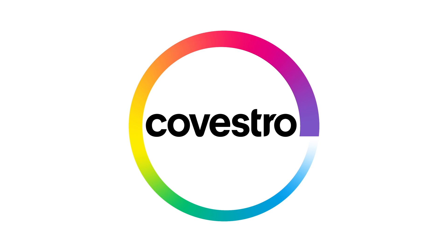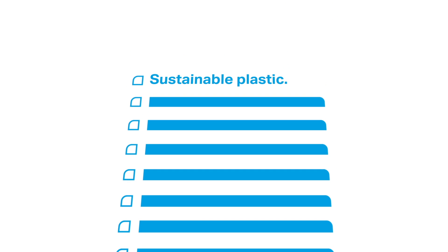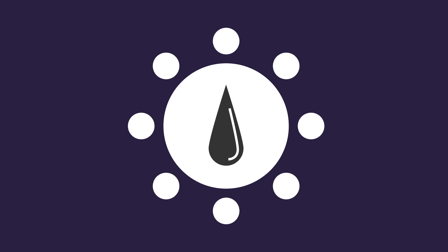At Covestro, we're constantly looking for sustainable ways to produce everything. And this one is high on our list. One of the materials in plastic made from oil is aniline.